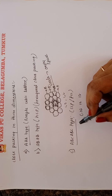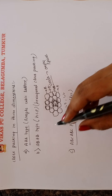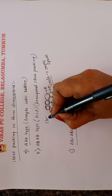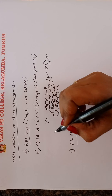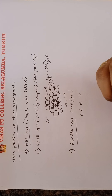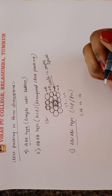The coordination number in the ABC ABC type cubic close packing is 12. Similarly, the ABAB type hexagonal close packing also has a coordination number of 12.